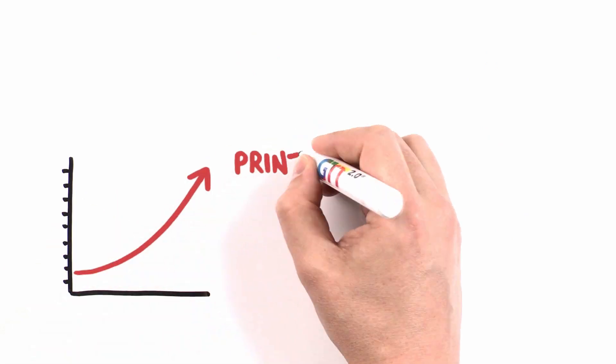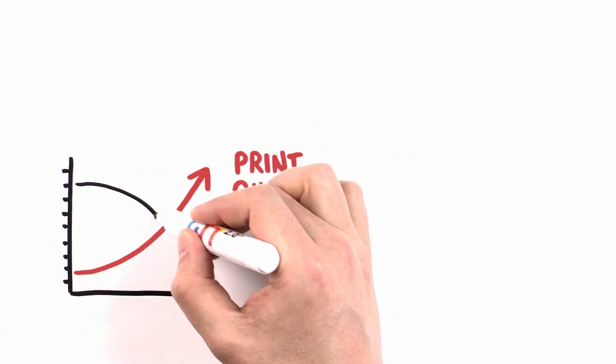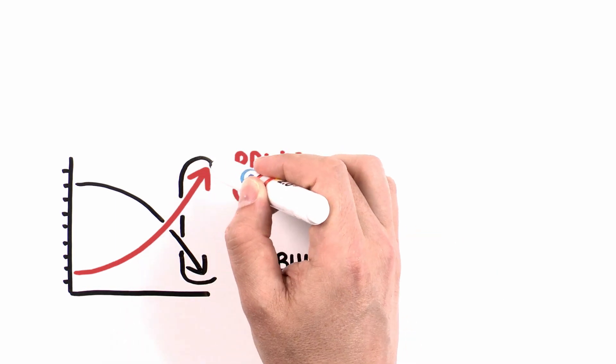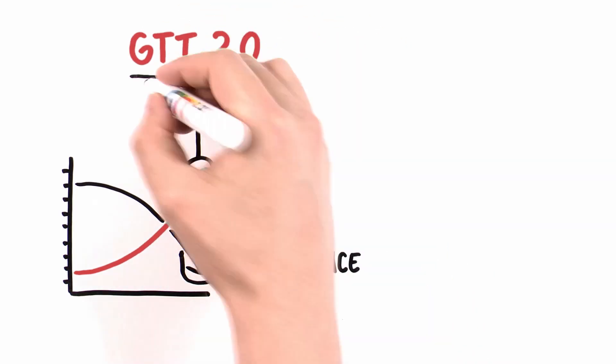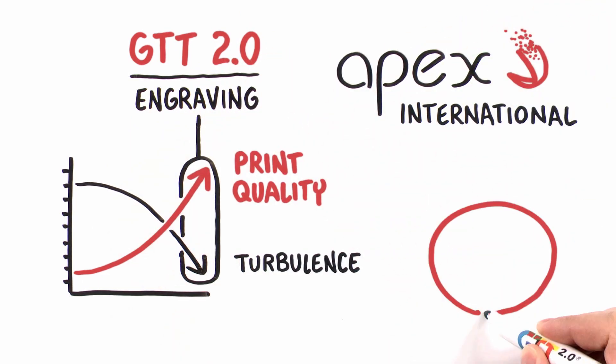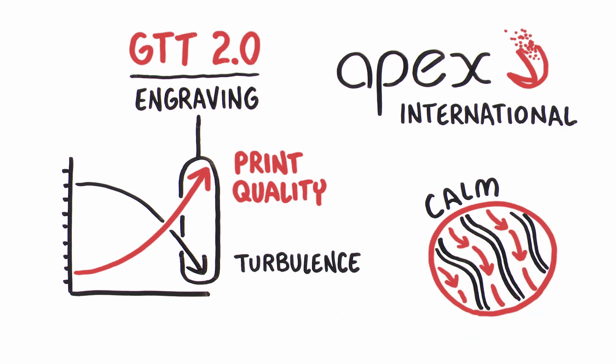For optimal print quality, the analog surface needs to maintain the lowest possible level of liquid turbulence. This is now possible with the GTT 2.0 engraving from Apex International, which has evolved to give a calm liquid surface and much more.